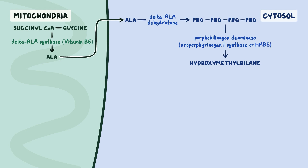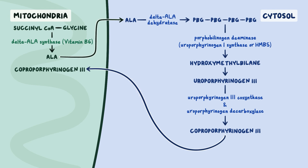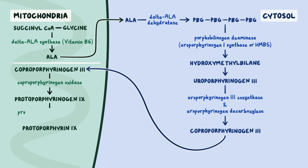Afterwards, hydroxymethylbilane is converted to uroporphyrinogen-3 and catalyzed to coproporphyrinogen-3 via uroporphyrinogen-3-cosynthase and uroporphyrinogen-decarboxylase, respectively. Next, coproporphyrinogen-3 is brought back into the mitochondria and converted into protoporphyrin-9 by coproporphyrinogen-oxidase. Protoporphyrin-9 is then converted by protoporphyrin-oxidase. Lastly, an iron molecule is added to protoporphyrin-9 via the enzyme ferrochelatase. And ten tongue twisters later, we've got a completed heme.